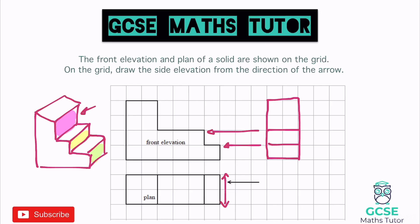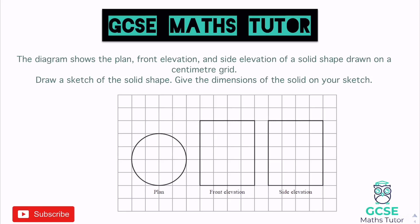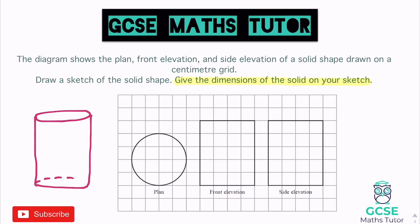Next question: we're given the plan, front elevation, and side elevation, and need to draw a 3D sketch of the solid shape and give its dimensions. From above it's a circle, and from the front and side it's a rectangle. There's only one shape that's circular from the top and rectangular from the side — a cylinder. As a sketch it looks like an oval on top with curved sides coming down and a slightly curved base.